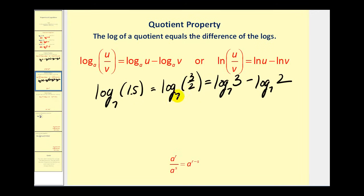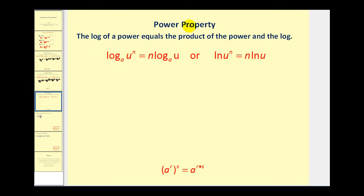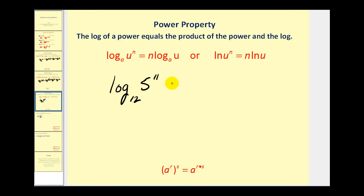If you have a quotient, you can rewrite the logs as a difference. The last property is the power property of logarithms, which states that the log of a power equals the product of the power and the log. So log base A of U to the N power equals N times log base A of U. This also applies with natural logs. The connection to the power property of exponents: if you have a power to a power, you multiply exponents — and here, if we have a log of a power, we multiply N times the log. For example, log base twelve of five to the eleventh equals eleven times log base twelve of five.